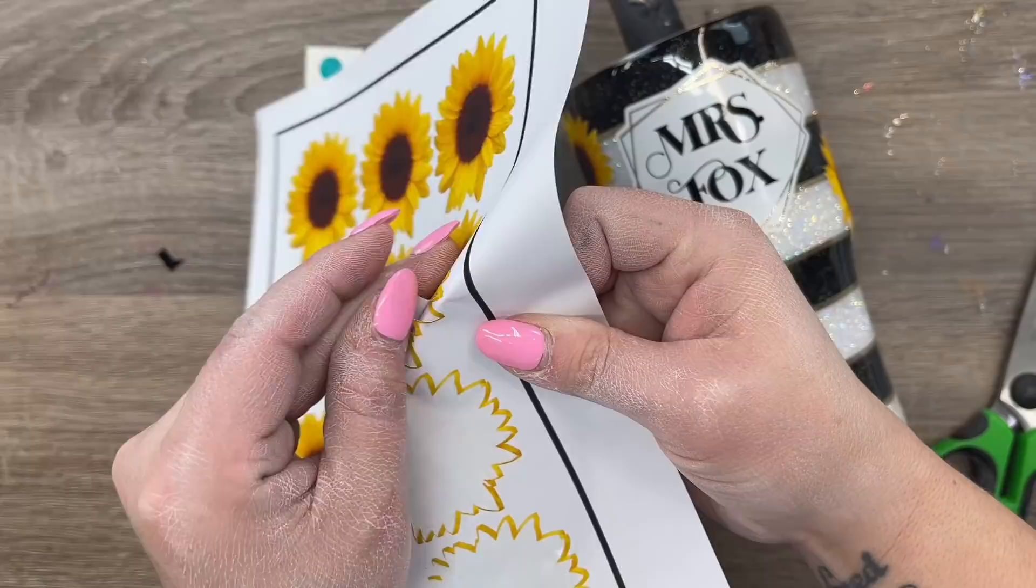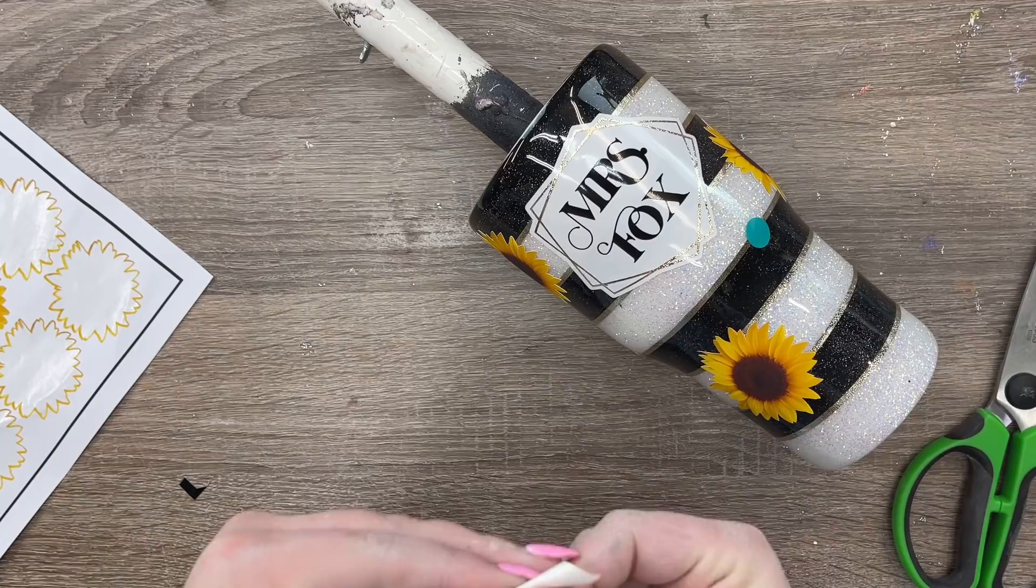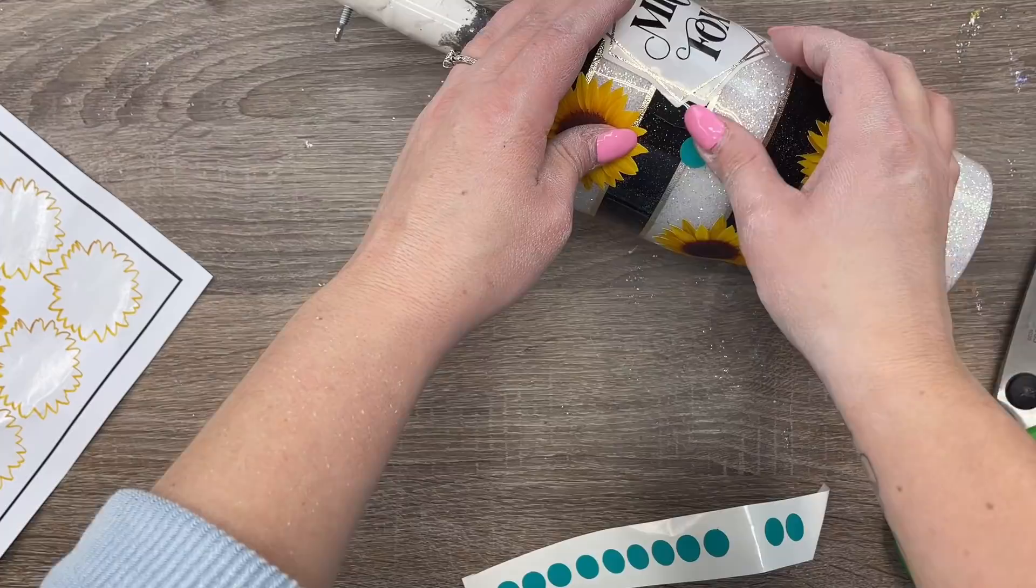I really try to take my time smoothing it out so I don't get any kind of air bubbles and things like that. I don't have a lot of rhyme or reason for where I'm placing my sunflowers.